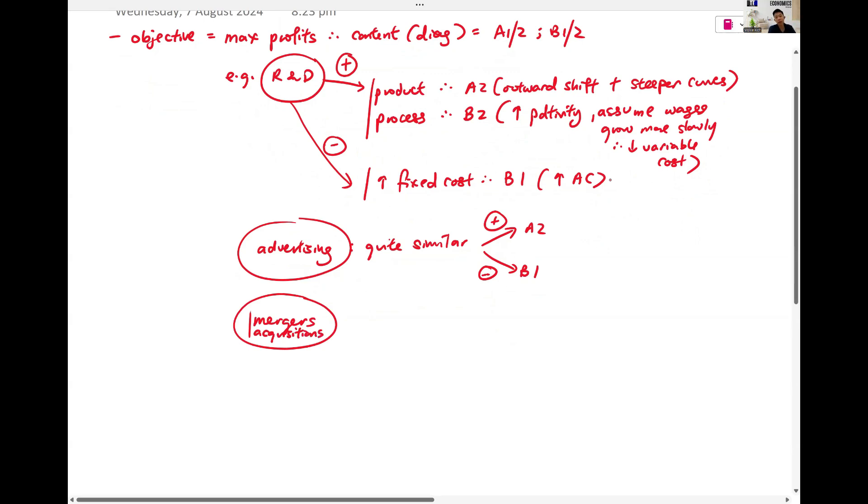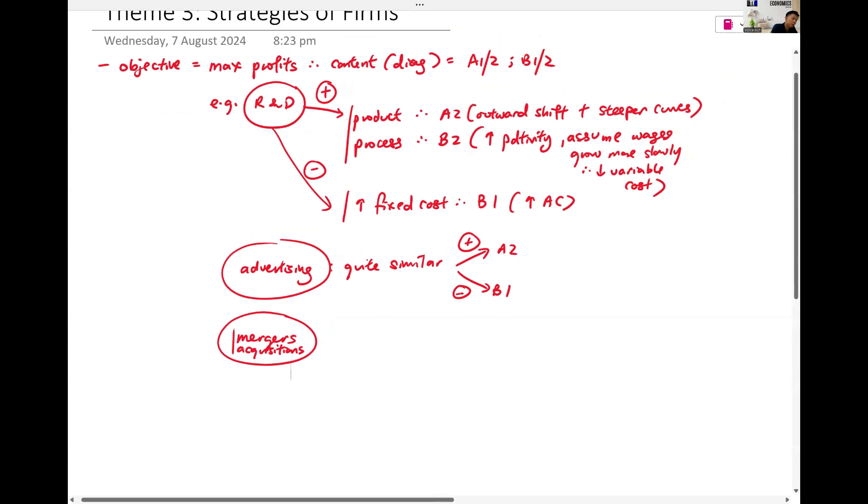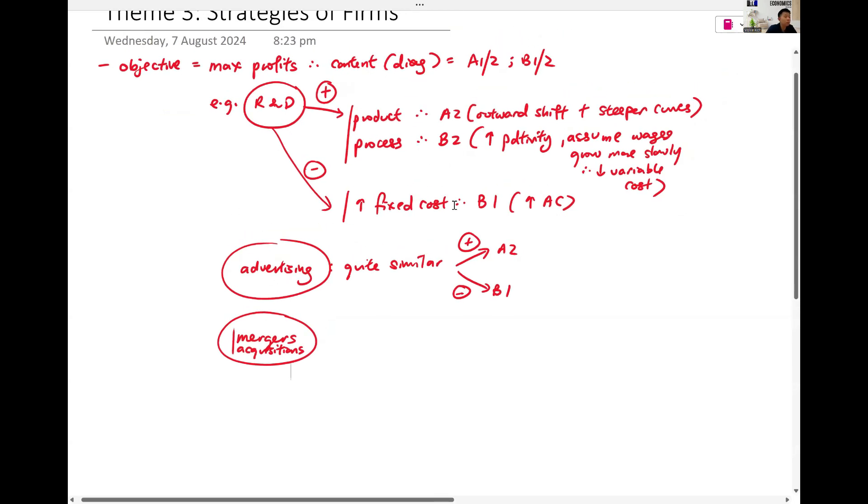So these strategies, one of you asked, do we have to illustrate the higher fixed costs from R&D on the diagram? You see, here we have three diagrams, right? A-2, B-2, B-1. To me, at least one diagram is good enough. In the case study, you don't really have so much time to draw. Just one of these diagrams will be good enough, but do explain the rest in words, including which curves are affected.